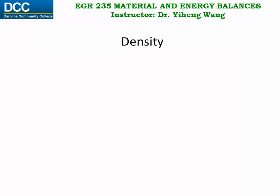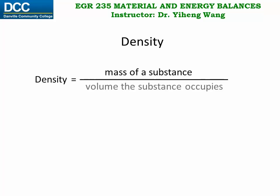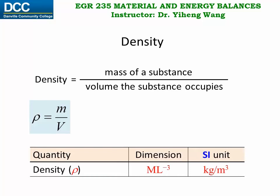We are probably all very familiar with density, which is defined as the mass of a substance divided by the volume it occupies. The common symbol used for density is the Greek letter rho, therefore the formula can be written as rho equals m over v, where m is mass and v is volume. Here is its dimension and SI unit: kilogram per cubic meter.